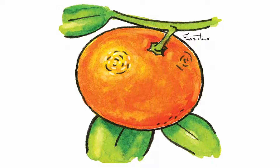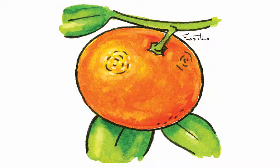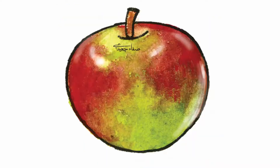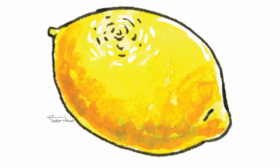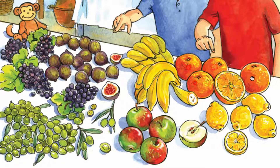What's this? It's an orange. It's big. What's this? It's an apple. It's big. It's a banana. It's big. It's a lemon. It's big. Oranges, apples, bananas and lemons are big.